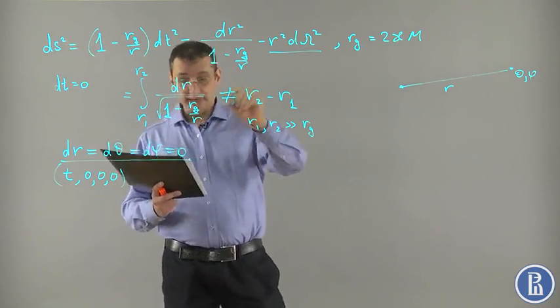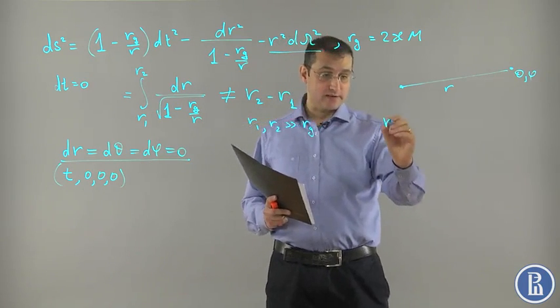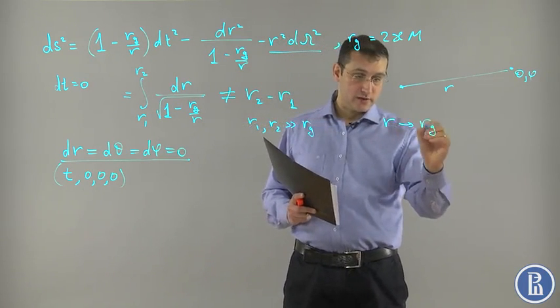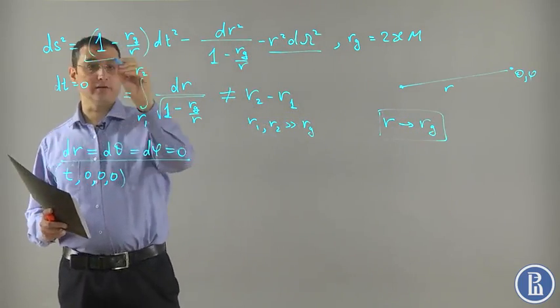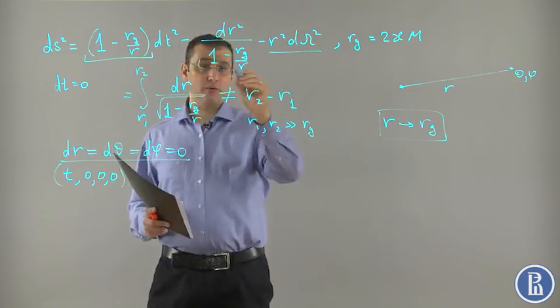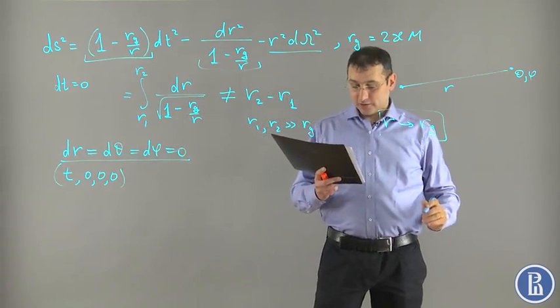One can easily see that this metric degenerates as R goes to RG. This metric degenerates. This component goes to zero while this component blows up, goes to infinity.